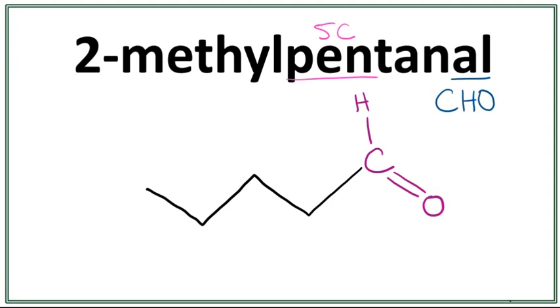Now let's number these carbons. The carbon in the functional group is always the first carbon. Then the second carbon, the third carbon, the fourth carbon, and the fifth carbon.